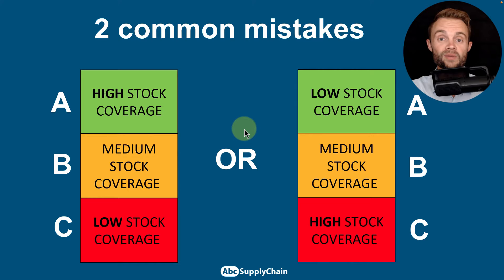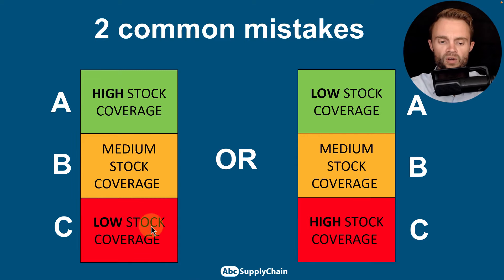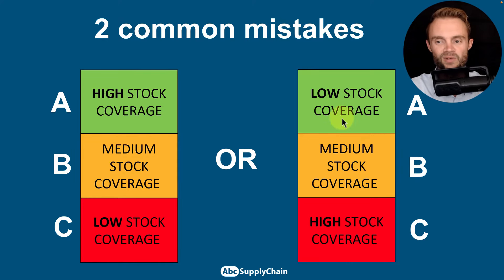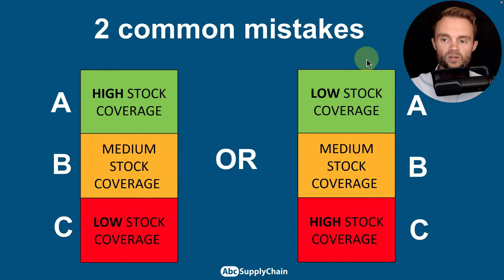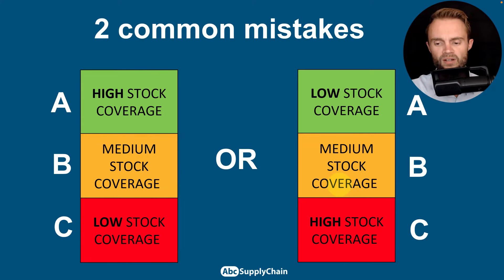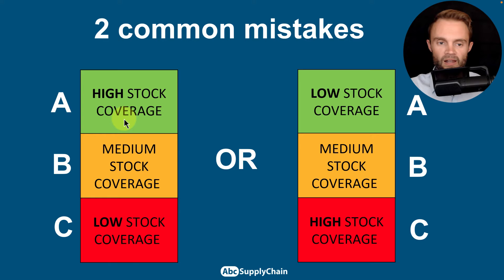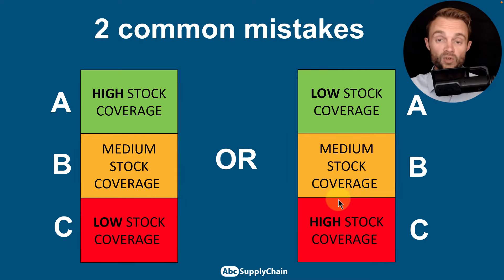There are two common mistakes with ABC alone. The first is to say a high-importance product needs very high stock coverage and safety stock, while a C code gets low coverage. The second mistake is the opposite: assuming a top seller is easy to predict so you don't need much safety stock, while giving C codes excessive safety stock due to high variation. Both approaches are wrong — one creates too much risk on A products, the other wastes inventory on low-potential products.